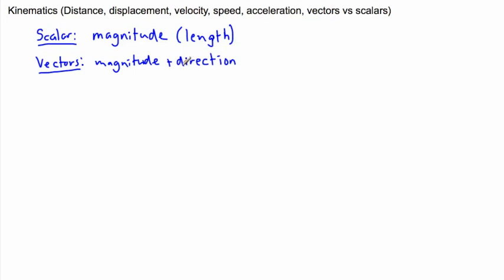An example of that could be - actually maybe I'll just give you some examples here. Scalars just have a length, vectors are things with a magnitude and a direction. Vectors are often drawn as arrows. For example, this is a vector.